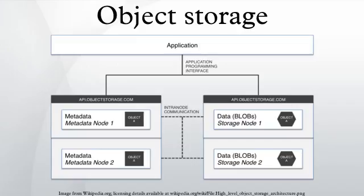Object storage is a storage architecture that manages data as objects, as opposed to other storage architectures like file systems which manage data as a file hierarchy, and block storage which manages data as blocks within sectors and tracks.